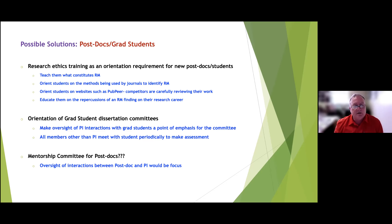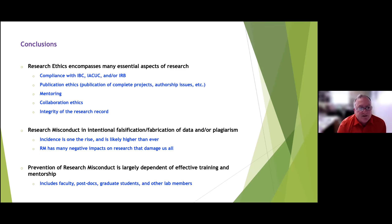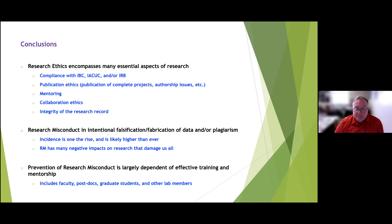In conclusion: research ethics encompasses many essential aspects of research — compliance with the IBC, IRB, publication ethics, mentoring, collaboration ethics, and the paramount integrity of the research record. Research misconduct is intentional falsification, fabrication, or plagiarism; its incidence is on the rise and is likely higher than ever. Research misconduct has many negative impacts that damage all researchers and institutions. Prevention is largely dependent on effective training and mentorship — including faculty, postdocs, graduate students, and all lab members.